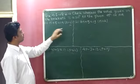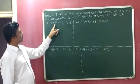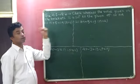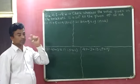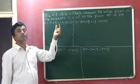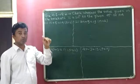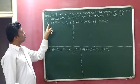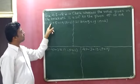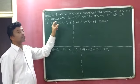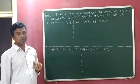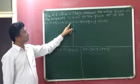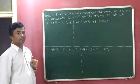Question number 1: n plus 5 is equal to 19, and in the bracket, n is equal to 1 is given to us. We have to check whether n equals 1 is the right solution of the equation n plus 5 equals 19 or not. To check this, we will substitute n equals 1 into the given equation.